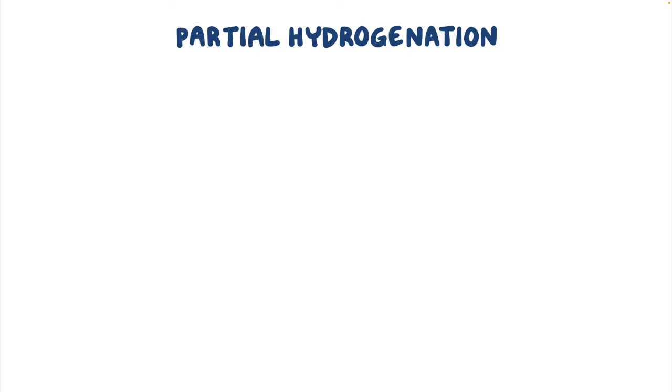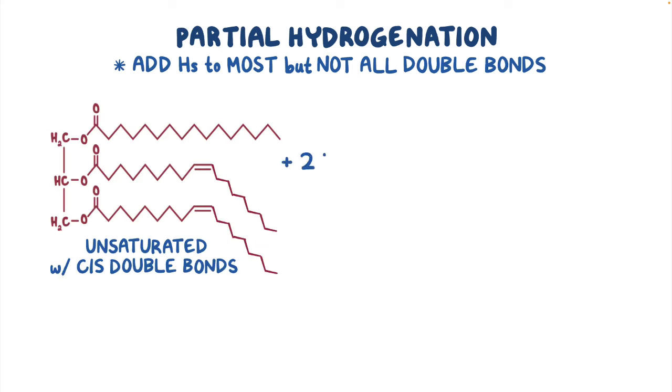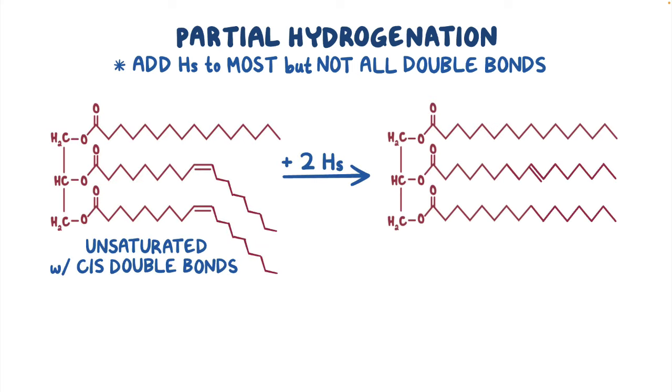Partial hydrogenation, on the other hand, refers to adding hydrogens to most, but not all, double bonds. So let's say now that we add just two hydrogens. When this happens, some double bonds can be turned into single bonds by the hydrogens, but then they might re-form, and what you end up with is an unsaturated fat, but some of those fats have trans double bonds.